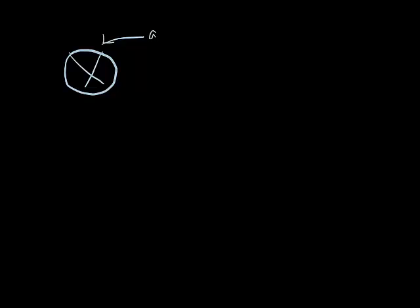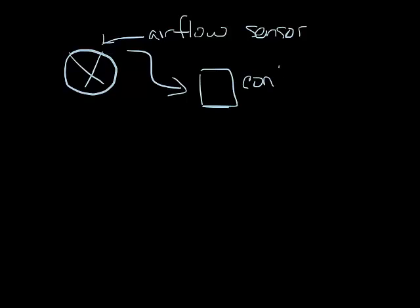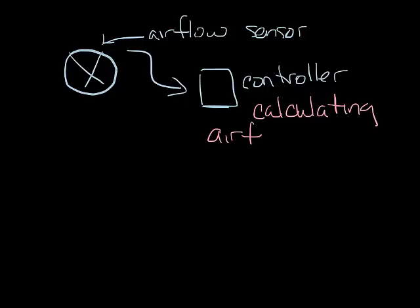Now let's look at pressure independence. In a pressure independent VAV box, the airflow volume is independent of the changes in pressure. Pressure independent VAV boxes have flow sensors that measure the pressure in the box and send this information to a controller. Using the equations we covered in the last podcast on pressure basics, the controller can calculate the airflow and control the damper to adjust for changes in pressure in the system.